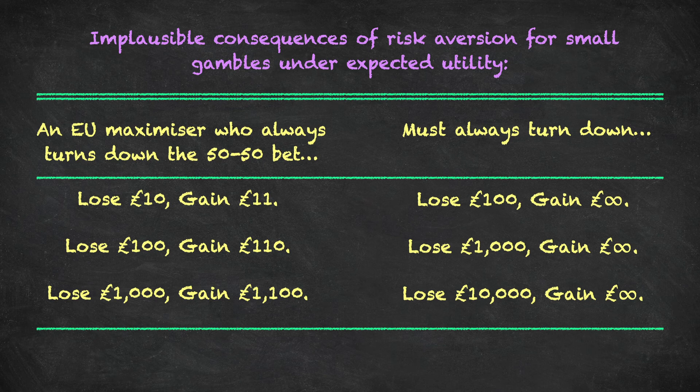One more example: a decision maker who always turns down a 50-50 lottery of lose £1,000 versus gain £1,000 — if they turn down that lottery for all wealth levels — then for a gamble where they would lose £10,000 with a 50% chance, there is no gain that will ever make them accept it, no matter how many trillions of pounds we put on the gain side, because the marginal utility of those gains is just so small.